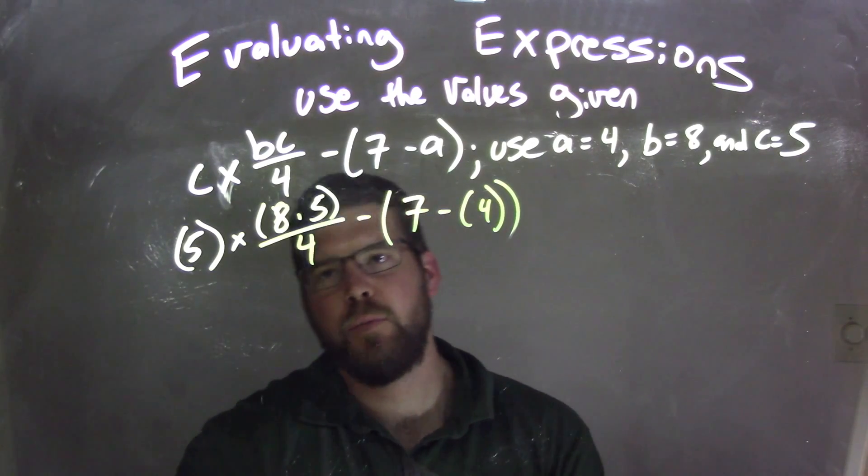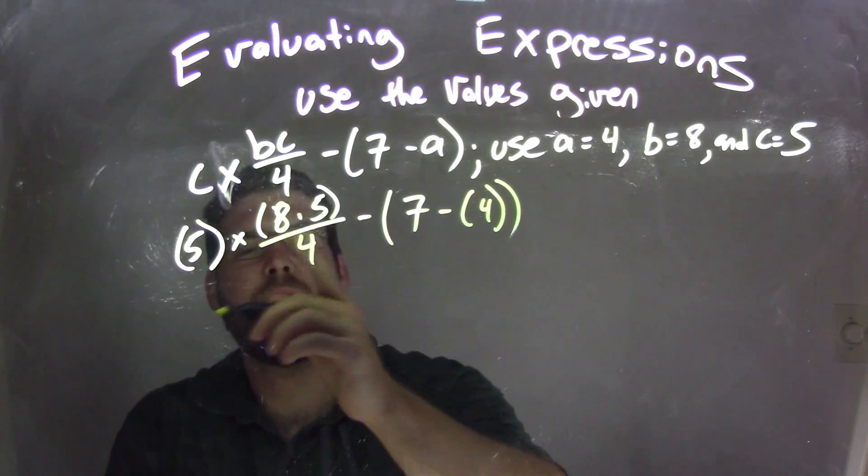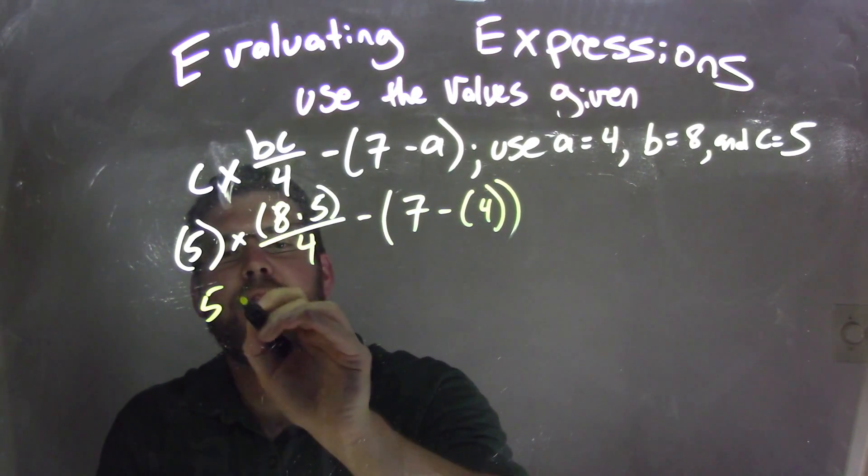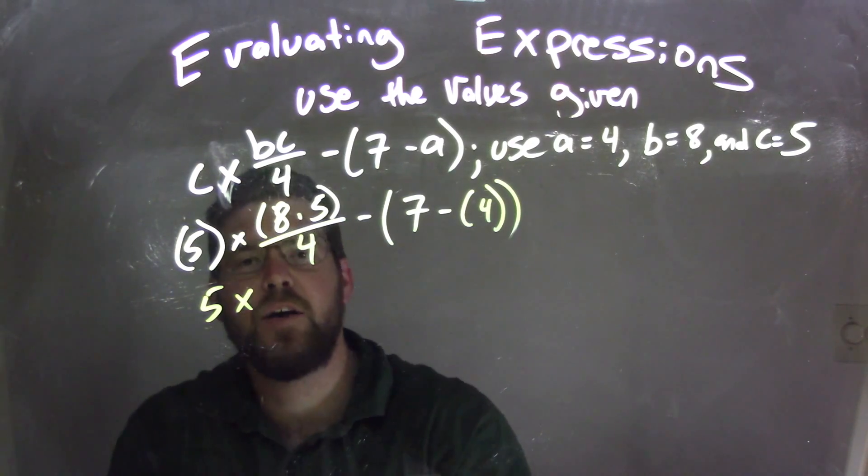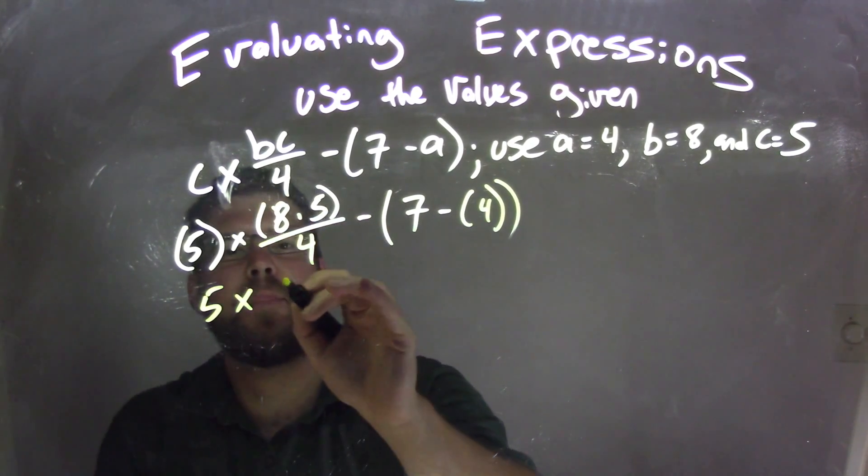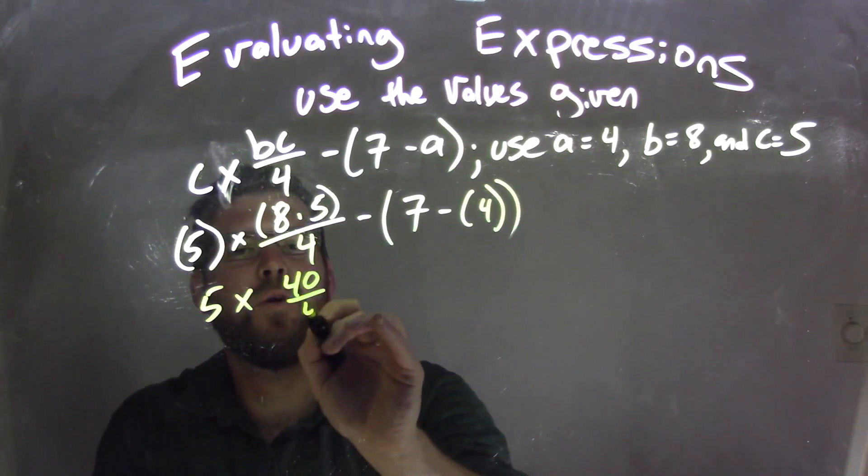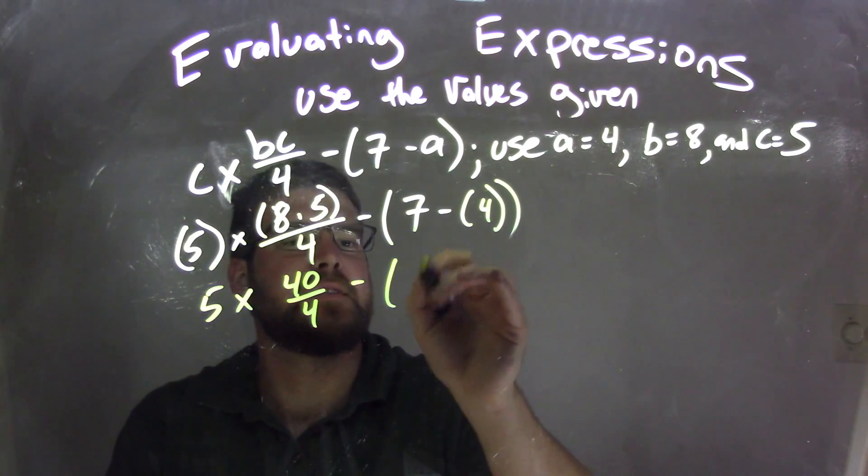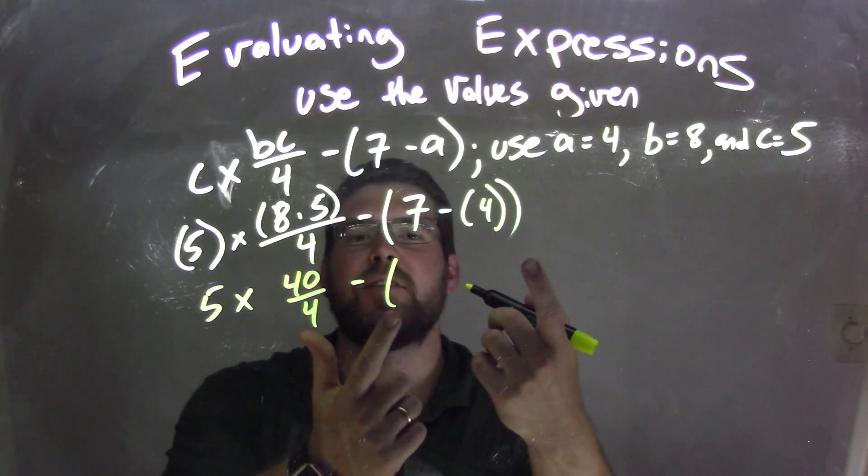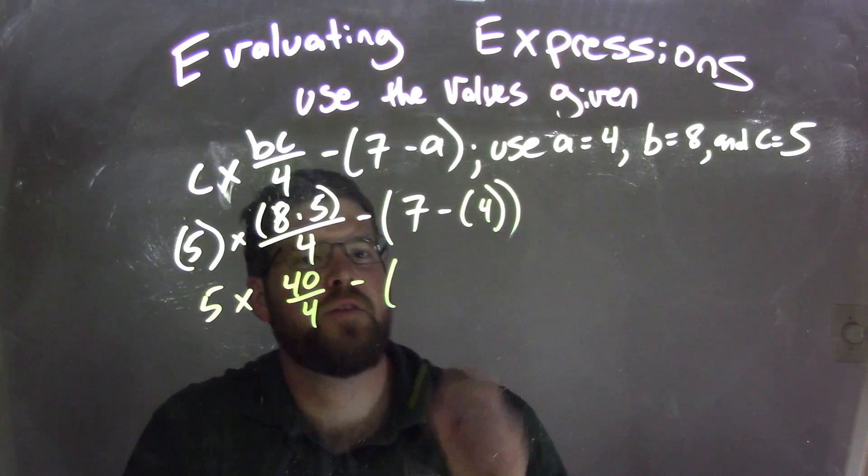Okay, so now let's simplify. We have what's going on inside the parentheses here, so let's deal with that first. 5 is on the outside, 8 times 5 is 40. So 40 over 4 minus 7 minus 4, that's inside another set of parentheses, so let's deal with that. 7 minus 4 is 3.